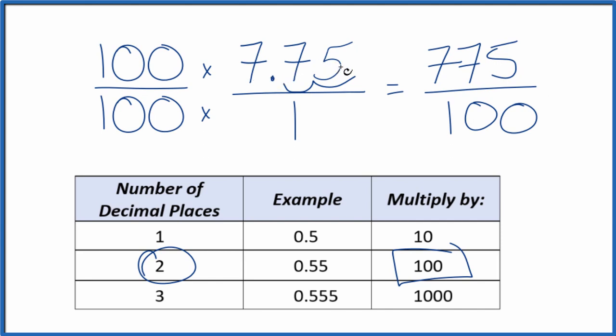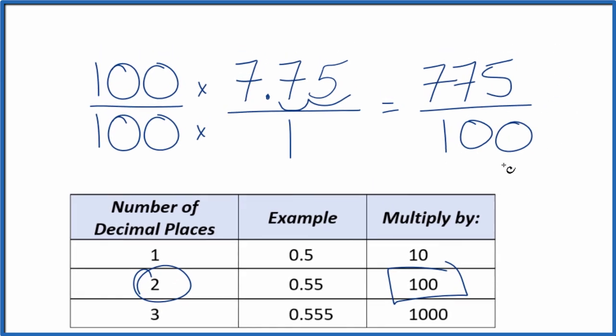The decimal 7.75 equals the fraction 775 over 100. But we need to simplify this to lowest terms. Let's do that.